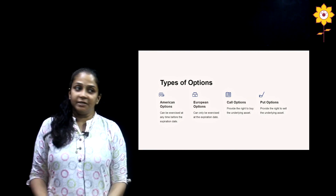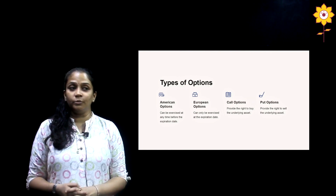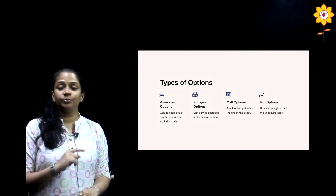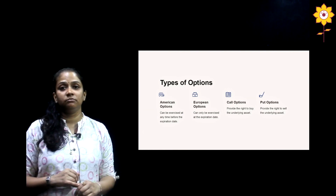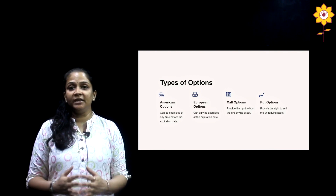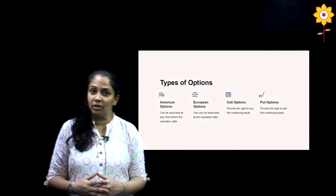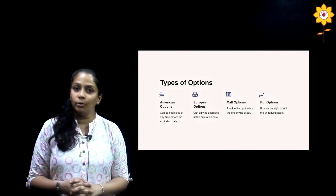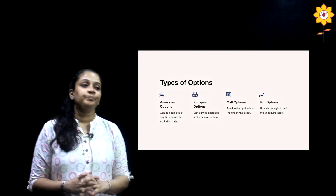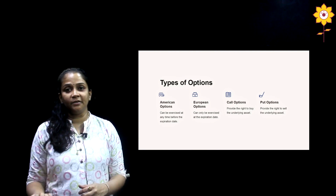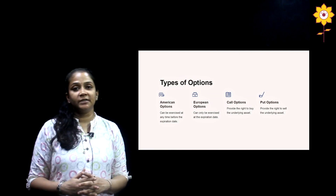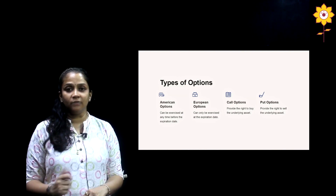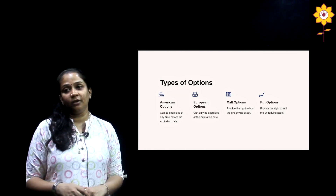There are two different categories of option execution. First, based on the time period of expiry: American options can be exercised any time before the maturity or expiry date specified in the contract, whereas European options can only be exercised after the expiry date. In India, we trade with European options only. Second, based on the nature of the contract — buying or selling — which gives us call and put options. Call option provides the right to the buyer to buy or sell the underlying asset, and put option gives the right to the seller to buy or sell the underlying asset.